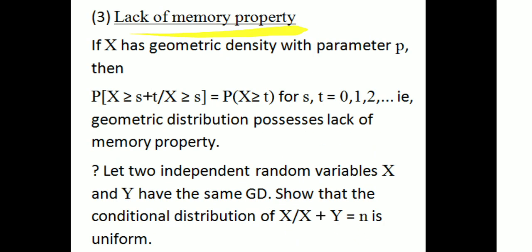Next, the lack of memory property. If x is a geometric random variable with parameter p, then P(X ≥ s + t | X ≥ s) = P(X ≥ t), for s, t = 0, 1, 2, 3, ... That is, the geometric distribution possesses the lack of memory property. Then, geometric distribution and uniform distribution are connected through the following problem.